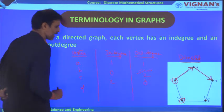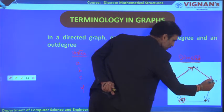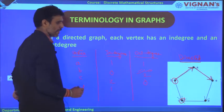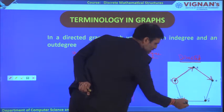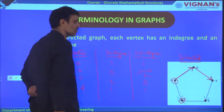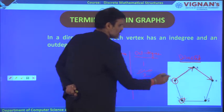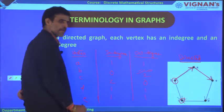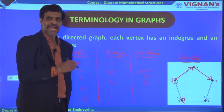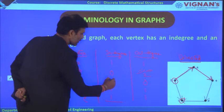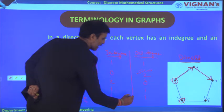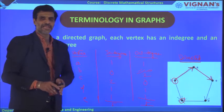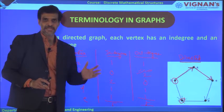For vertex E: one edge is coming towards E and one is going towards E, so in-degree is 1 and out-degree is also 1. The sum of in-degrees is 5 and the sum of out-degrees is also 5. This is how we calculate in-degree and out-degree for a directed graph. For an undirected graph, we only calculate degree — the number of edges connected to a vertex.